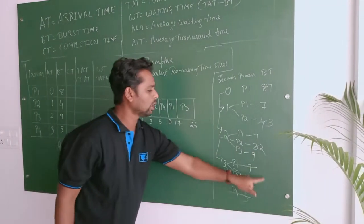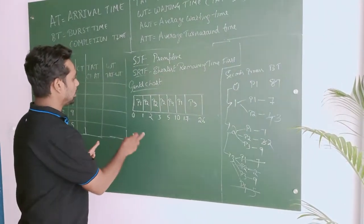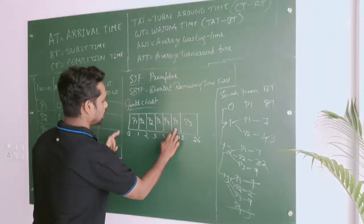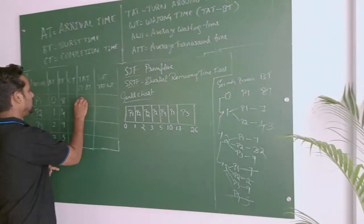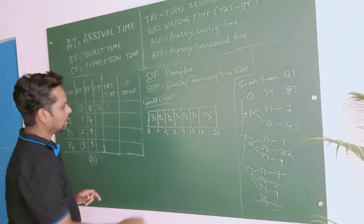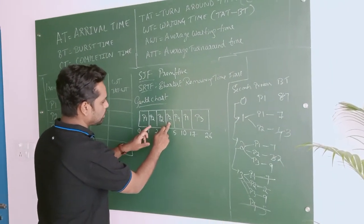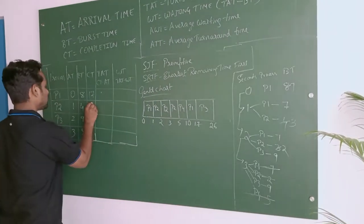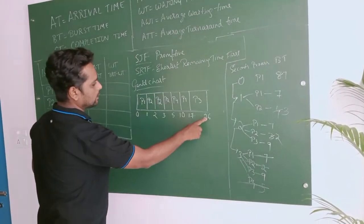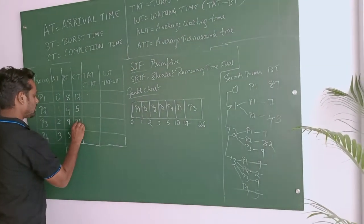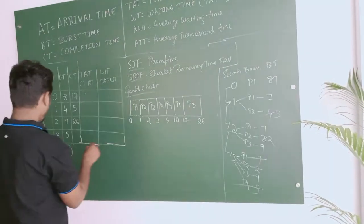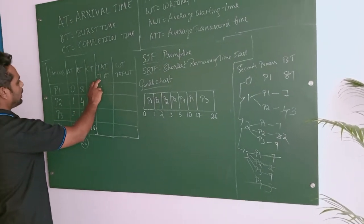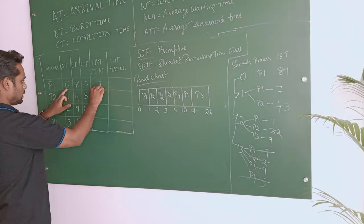So remember: every process executes until the next arrival time, you repeat and check until the last process arrival time, then go non-preemptive. Completion times: P1 = 17 seconds (take the rightmost occurrence), P2 = 5 seconds (rightmost), P3 = 26 seconds, P4 = 10 seconds. Turnaround time = completion time minus arrival time: P1 = 17 - 0 = 17, P2 = 5 - 1 = 4, P3 = 26 - 2 = 24, P4 = 10 - 3 = 7.